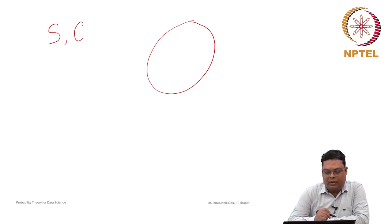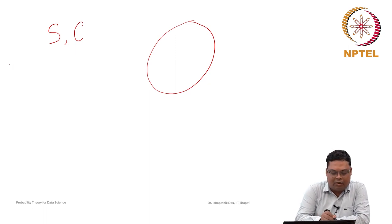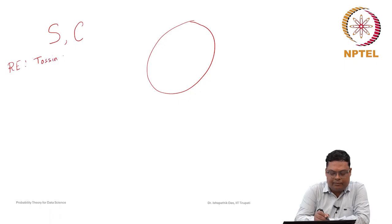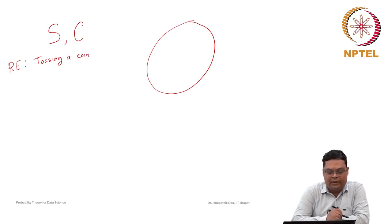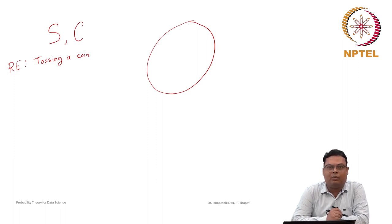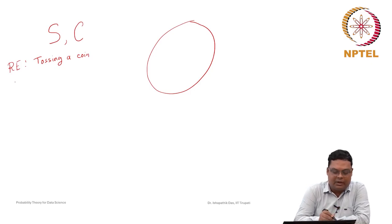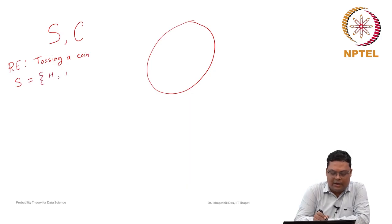Let us consider one example. Remember the random experiment of tossing a coin. When tossing a coin, we do not know whether head or tail will come in any given run. But we know all possible outcomes — head and tail. So S is the sample space containing all possible outcomes: head and tail.